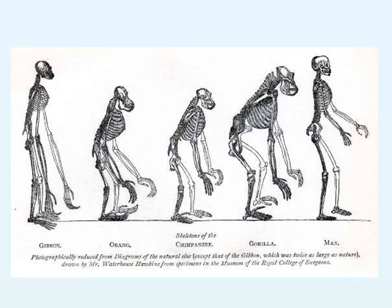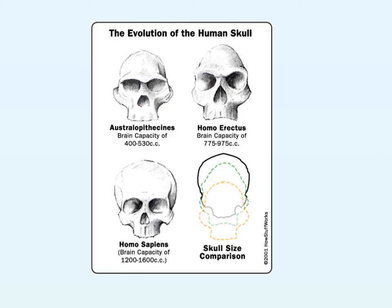There's another picture here of different primates — gibbons, orangutans, chimpanzees, gorillas, and then man. You can see lots of similarities. This is actually from the Museum of the Royal College of Surgeons and shows a lot of similarities, but also the differences between primates and humans, showing that they probably did evolve from a common ancestor. And the evolution of the human skull over time shows how it has changed — all really good evidence for Darwin's theory of evolution.